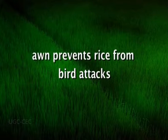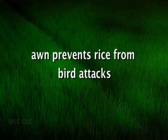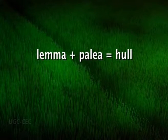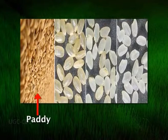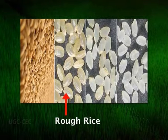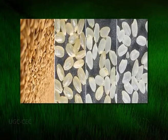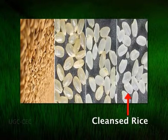The presence of awn in rice is advantageous as it is less subjected to bird attacks. The lemma and palea together are known as hull. The rice grain with the hull is known as paddy or rough rice, whereas the one in which the hull is removed is known as brown, husked, or cleaned rice.